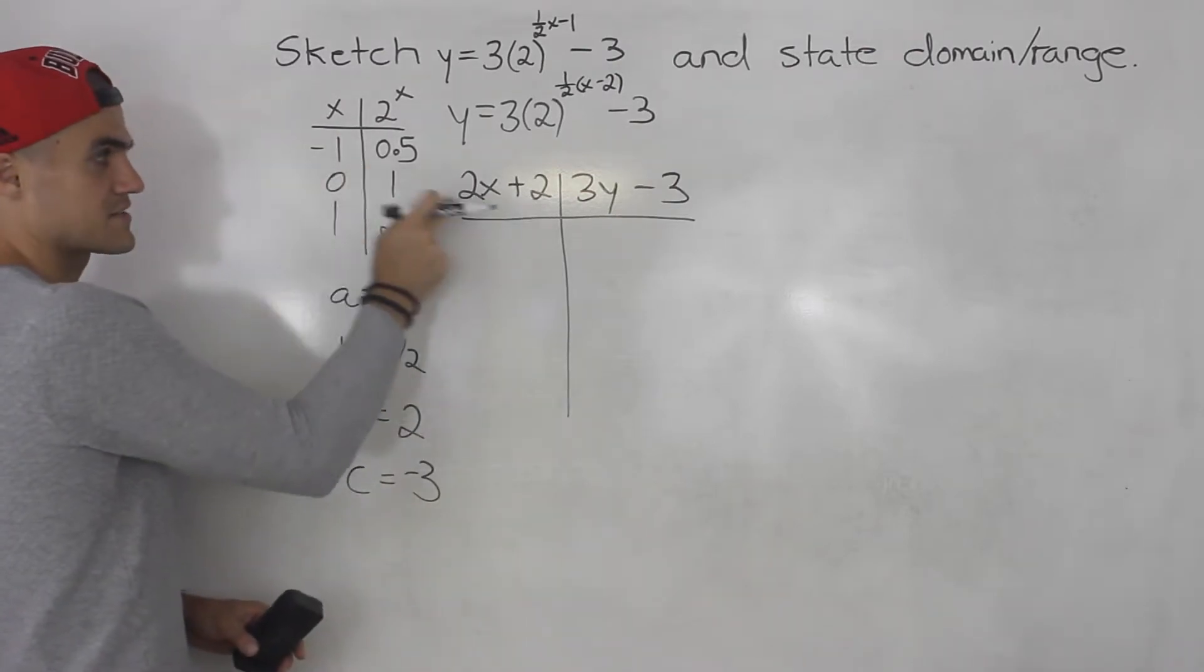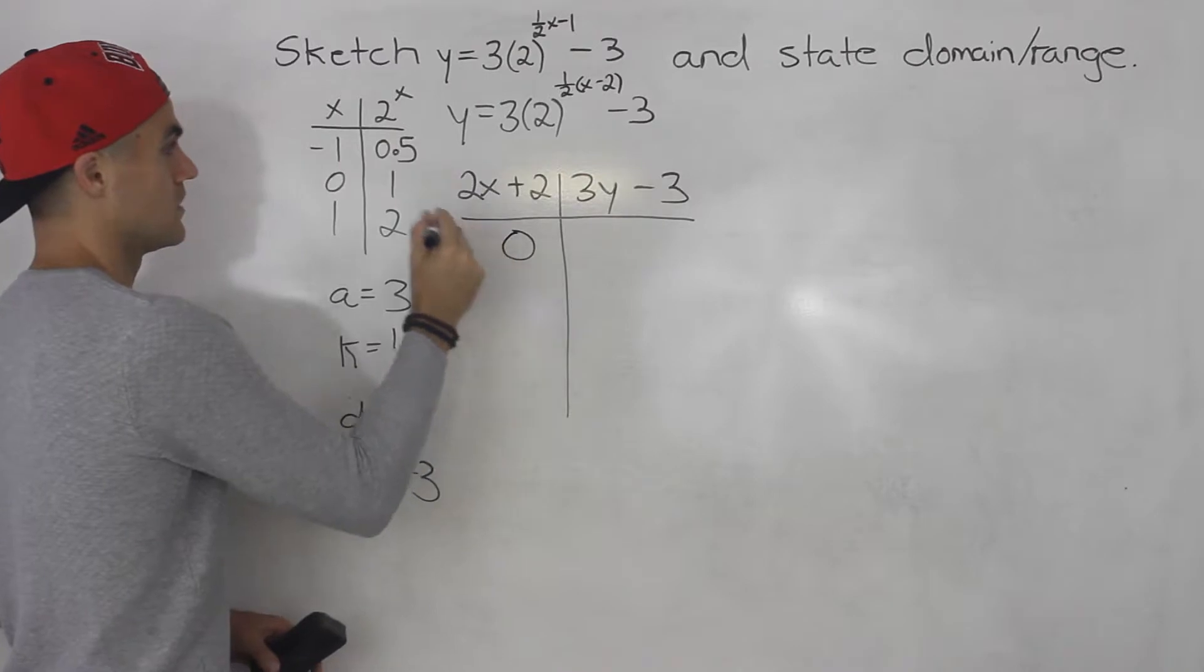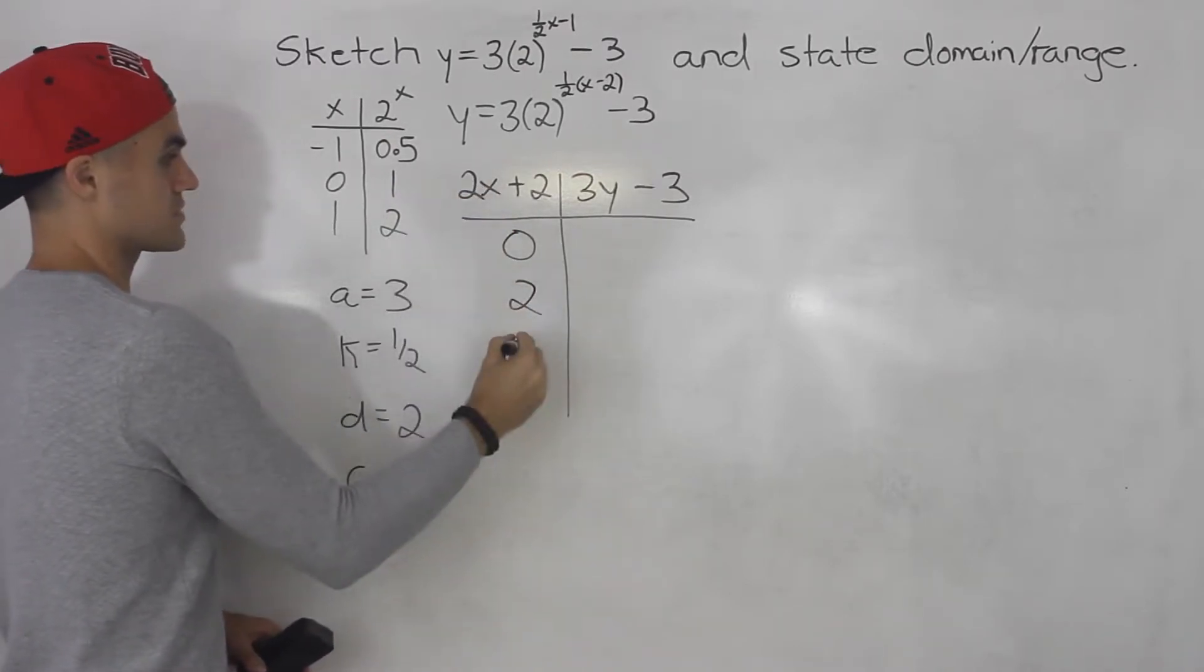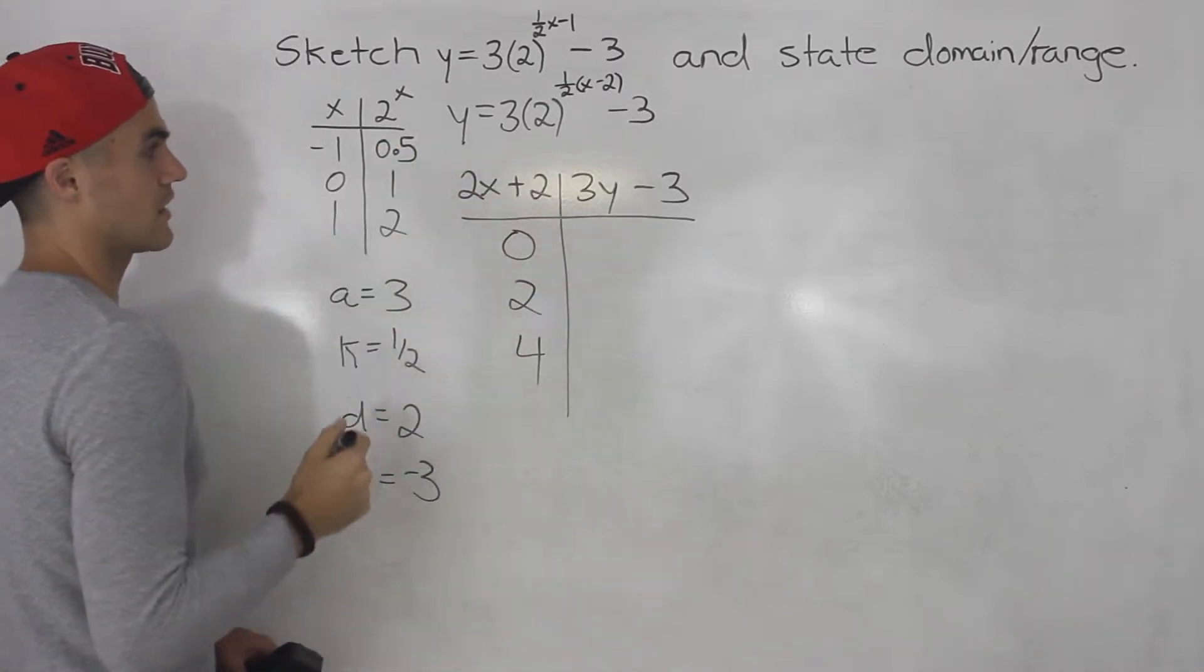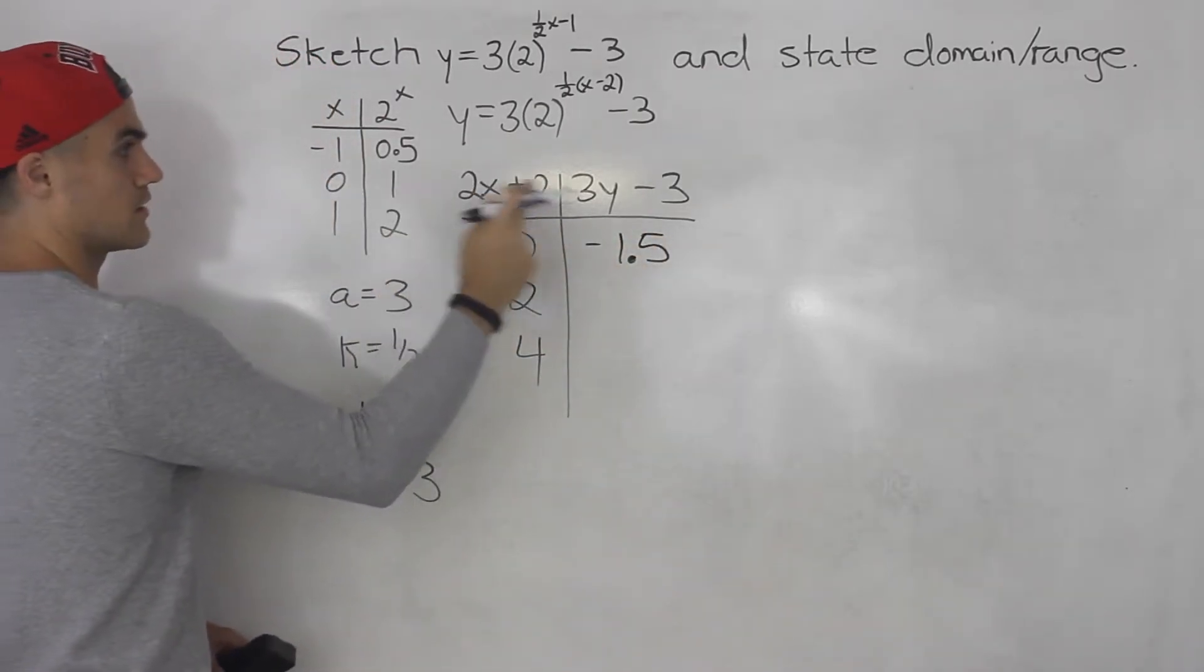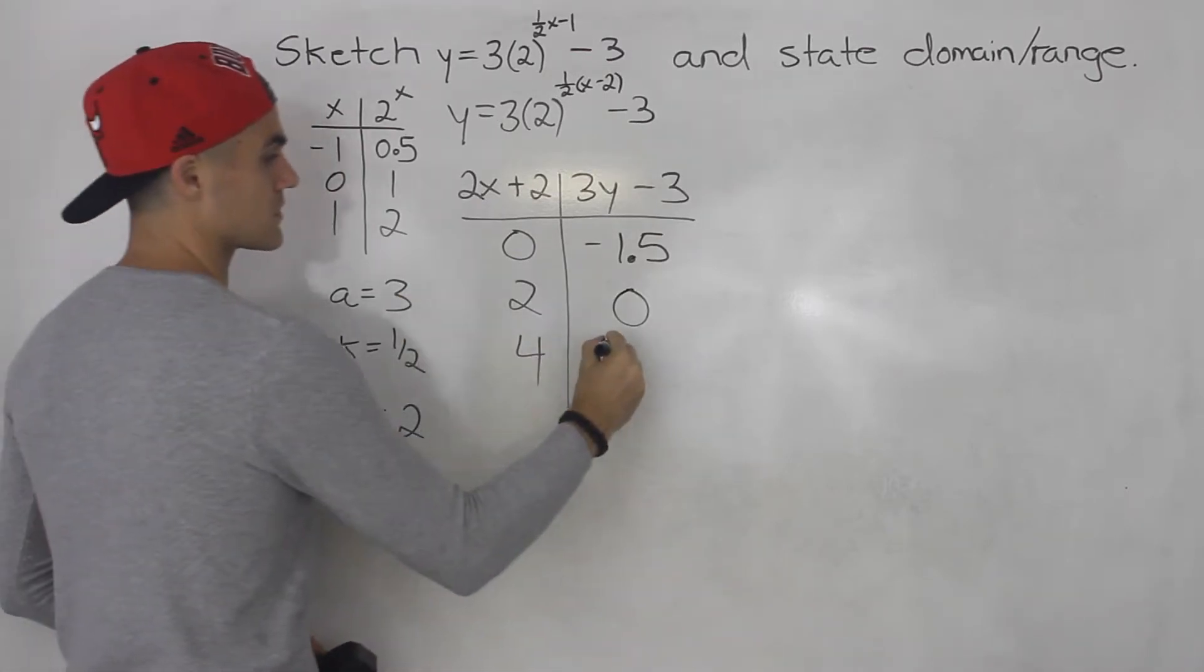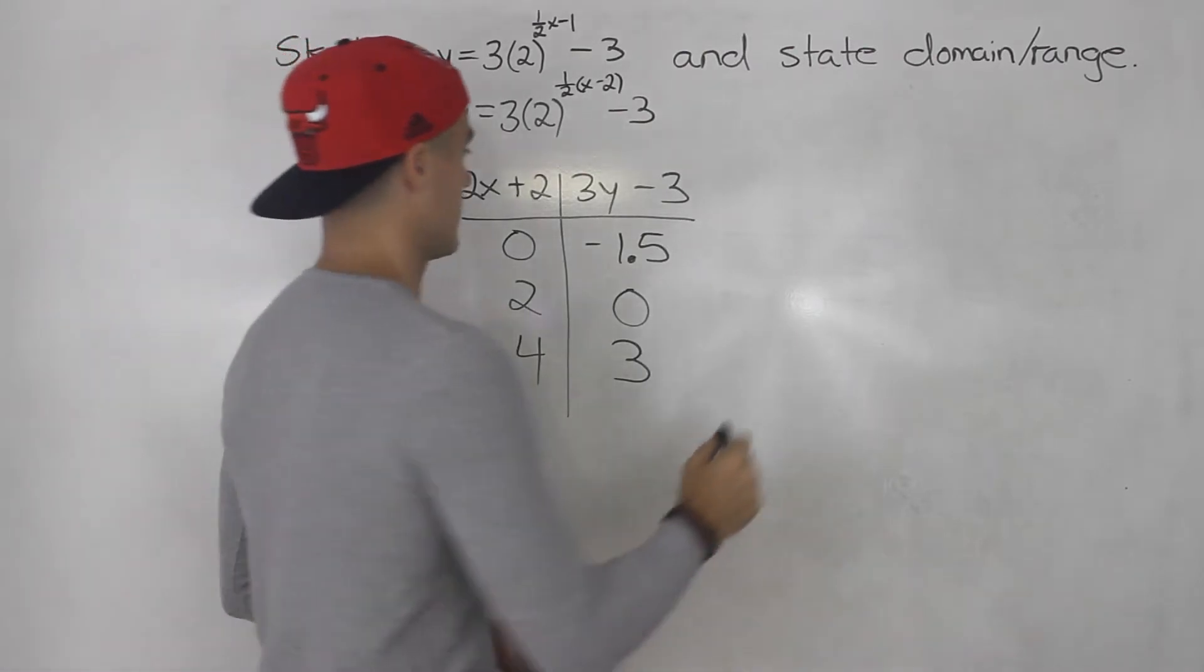So taking these x values putting it through this. 2 times negative 1 is negative 2 plus 2 is 0. 2 times 0 plus 2 that gives us 2. 2 times 1 plus 2 gives us 4. And then 3 times 0.5 that gives us 1.5. Minus 3 gives us negative 1.5. 3 times 1 minus 3 that gives us 0. 3 times 2 minus 3 gives us 3. So we have these points.